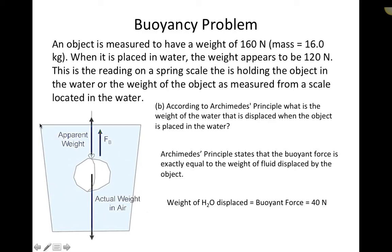To visualize this: imagine the container is completely filled to the top with water, and a little spout catches all the water that spills out. When you place the object in the water, it displaces water that spills out into a container. If you catch all that displaced water and weigh it, it would weigh 40 newtons — exactly equal to the upward buoyant force.